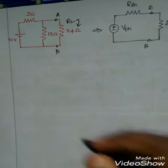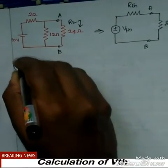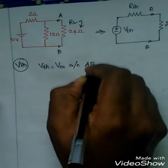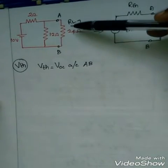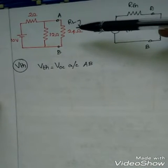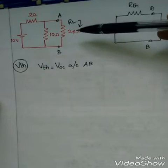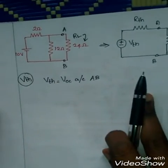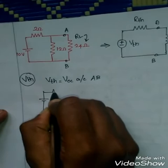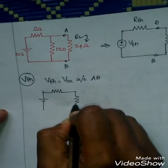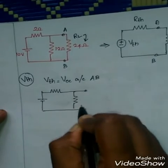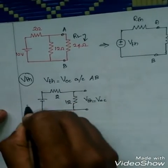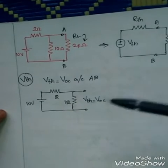Thevenin's voltage is nothing but the open circuit voltage across the terminals A and B. Since the 24 ohm is the load resistor, remove it. Redraw the circuit: 10 volt in series with a 2 ohm resistor, in series with the 12 ohm resistor. With the load removed, there is an open circuit — no current flows through the removed branch, and 2 ohm and 12 ohm are in series.